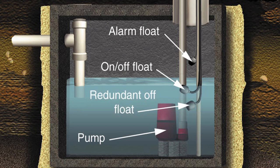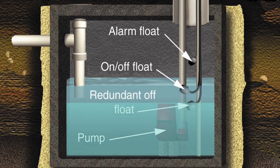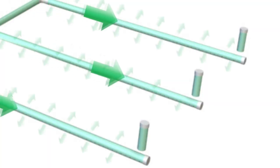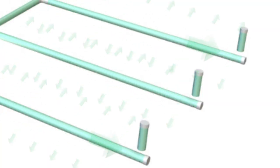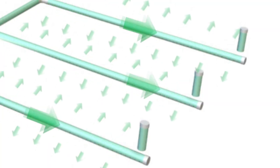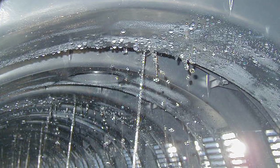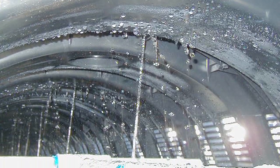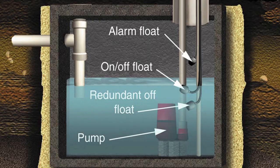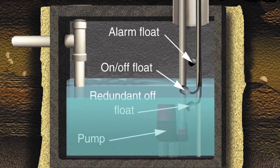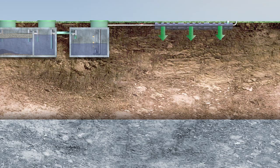The redundant off float prevents the pump from turning on if there's not adequate wastewater to cover the pump. The on/off float turns the pump on as the wastewater level rises. The effluent is dosed every few hours and is spread out across the whole bottom of the trench. Some pumps operate on demand while others use a timer to start a pump cycle. As the pump moves wastewater into the drain field, the level drops, dropping the float and turning off the pump, providing the soil with time to dry out between doses.